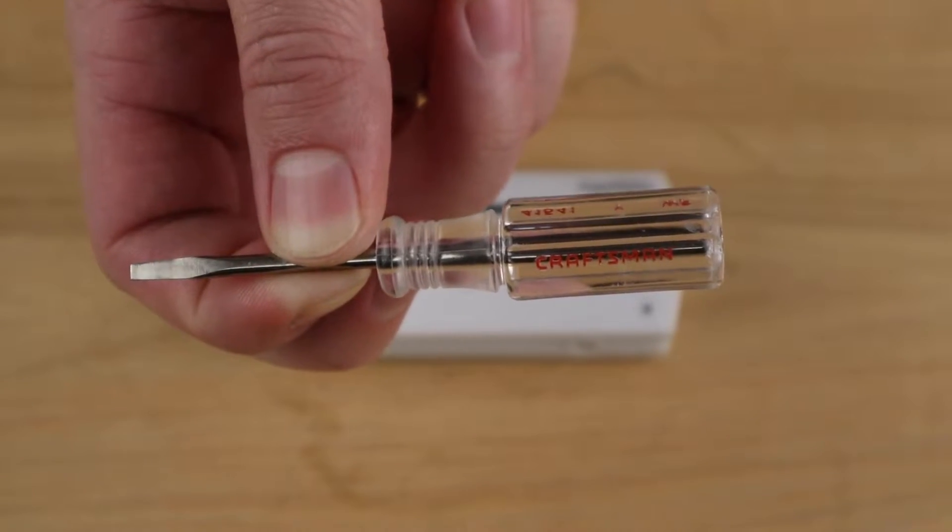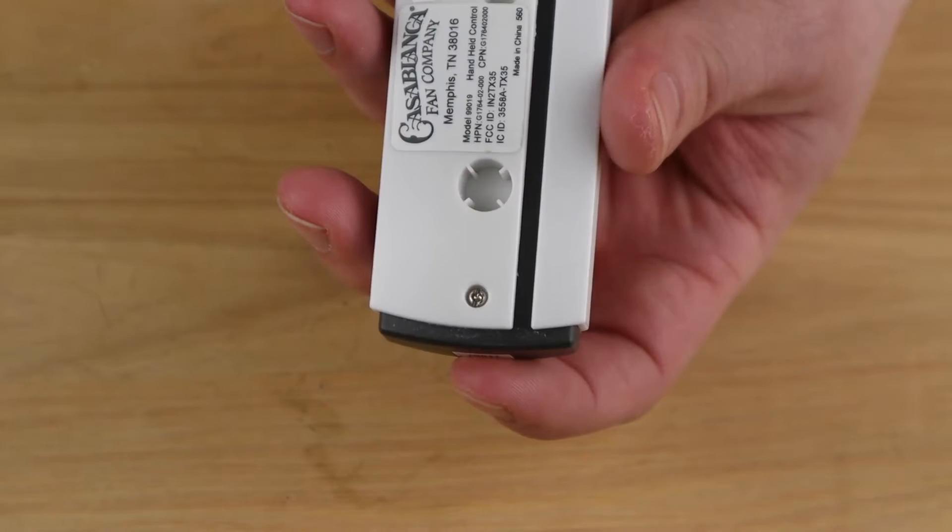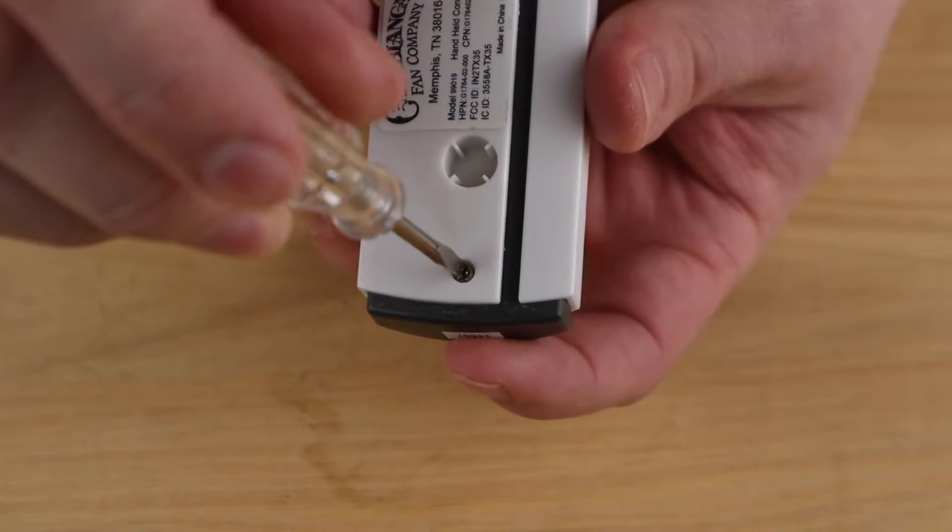So you're going to go ahead and pull out your tiny screwdriver. I know that most people have already gotten to this part. Flip the control over and you're going to remove this screw.